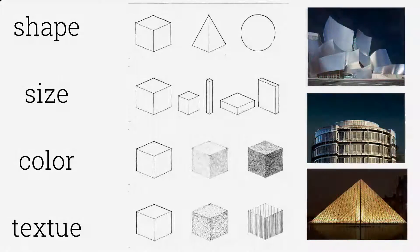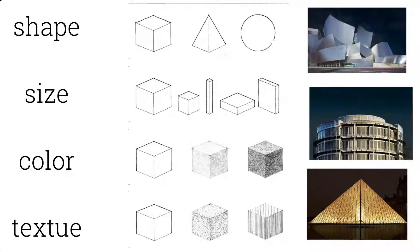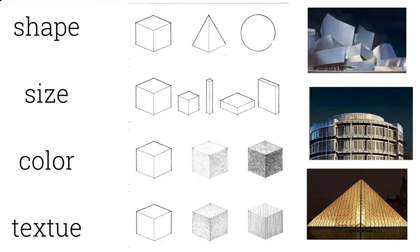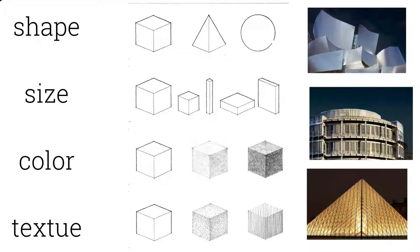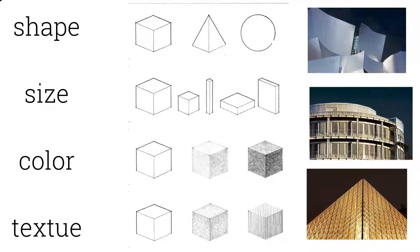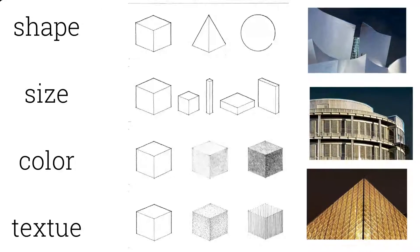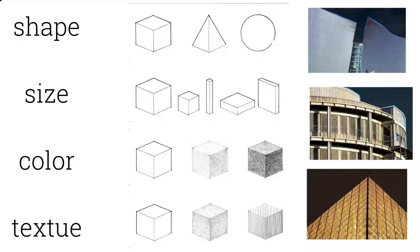Third is colour. It's important because it affects the visual perception of the form. And fourth is texture. It's the visual quality of the surface determined by the size, shape, arrangement, and proportions of the parts. So when there's a shape that has a size, colour, and texture, then it's a form.